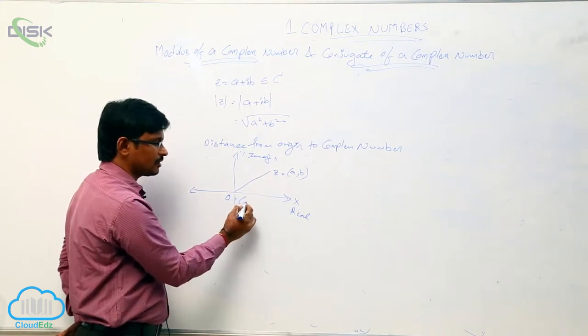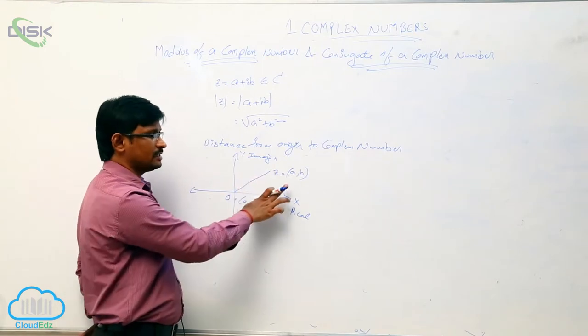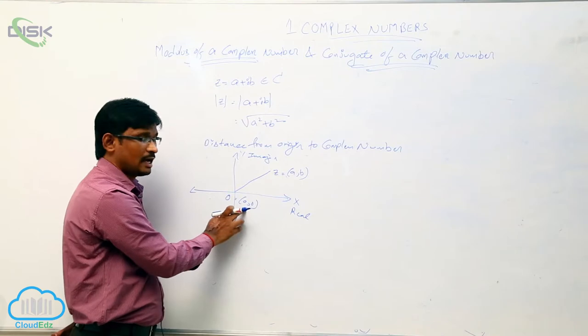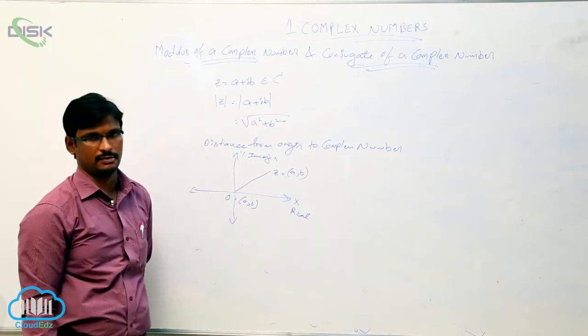Here is 0 comma 0, and this is a comma b. These two are general coordinates. Distance between these is under root of a square plus b square, which is nothing but the modulus of the complex number.